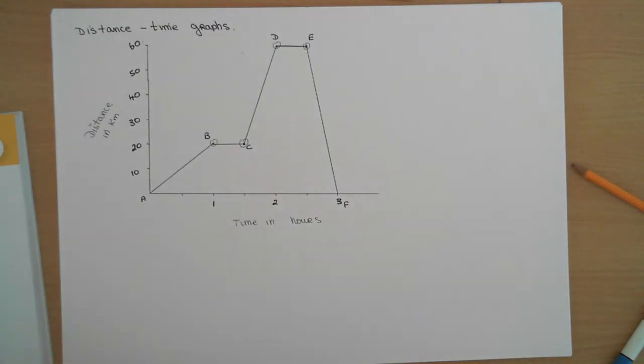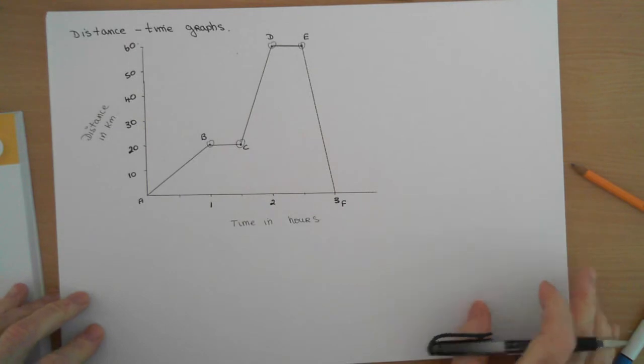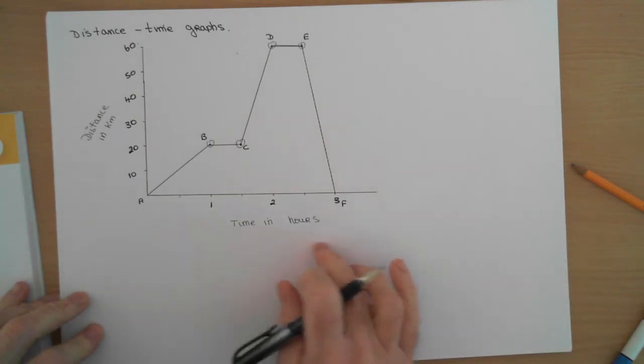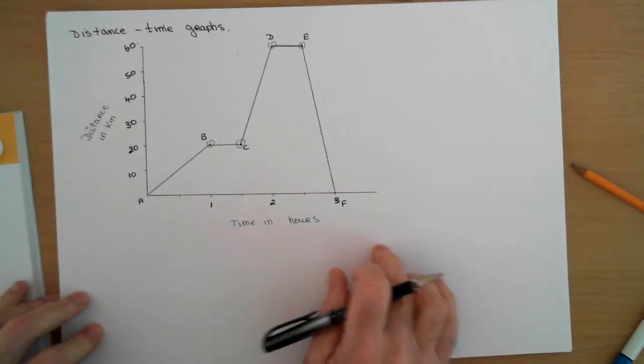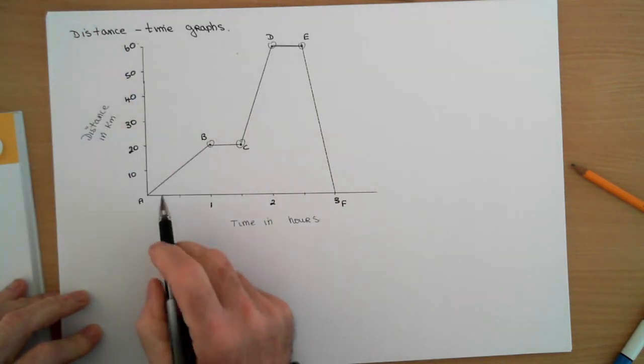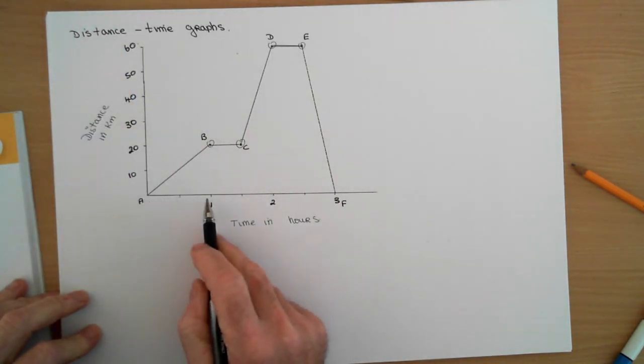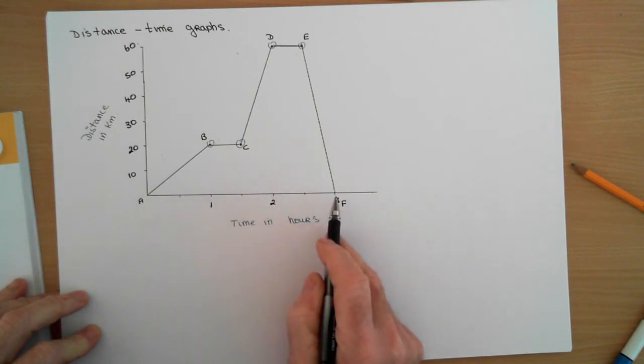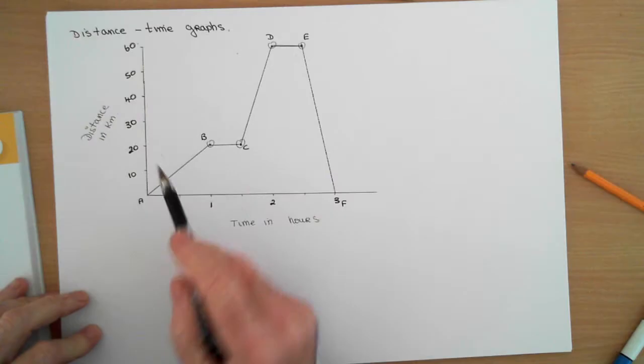You will have to understand these distance-time graphs, and they have good real-life applications. In the graph, time is always on the horizontal axis and distance is on the vertical axis. So this is time after one hour, after two hours, after three hours, and this is distance - how far they travel.